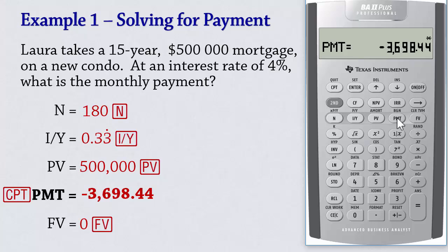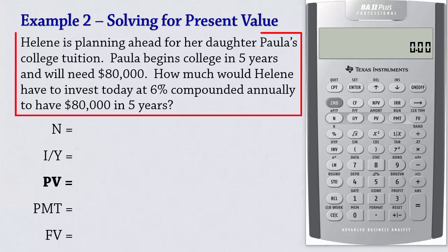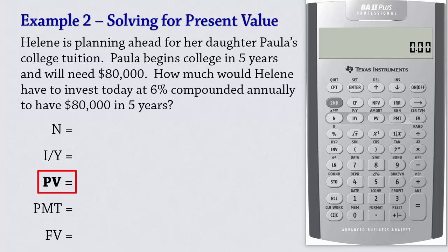The next example shows how to solve for present value. Helene is planning ahead for her daughter Paula's college tuition. Paula begins college in 5 years and will need $80,000. How much would Helene have to invest today at 6% compounded annually to have $80,000 in 5 years? This is a compound interest problem where the present value is required.